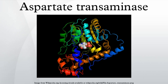Within each active site, a couple of arginine residues are responsible for the enzyme's specificity for dicarboxylic acid substrates. Arg-386 interacts with the substrate's proximal carboxylate group, while Arg-292 complexes with the distal carboxylate. In terms of secondary structure, AST contains both alpha and beta elements. Each domain has a central sheet of beta strands with alpha helices packed on either side.